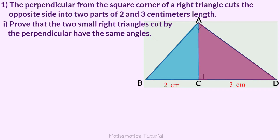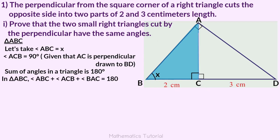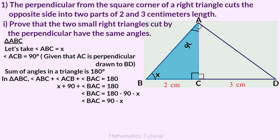We have to prove that the triangle has a 90 degree angle. In triangle ABC, angle ABC plus angle ACB plus angle BAC is equal to 180 degrees. So X plus 90 degrees plus angle BAC equals 180 degrees. Therefore angle BAC is equal to 180 minus 90 minus X, which is 90 minus X.